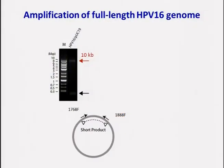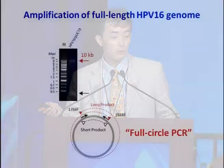Then we happened to find a surprising result with this polymerase. When we used a primer set targeting a short region in the E1 gene, this new polymerase generated long 10-kilobase DNA as well as short DNA. We confirmed the sequence of this DNA and indeed it was the full genome of HPV-16. So we concluded the polymerase travels around the circular template and amplifies the full genome HPV-16. We call this PCR method full circle PCR.